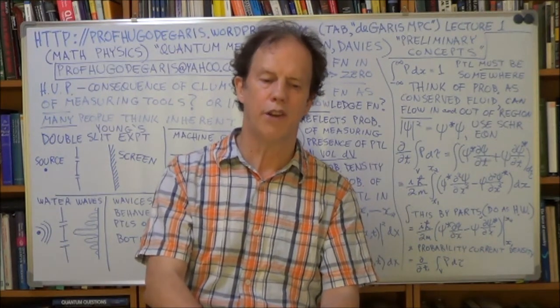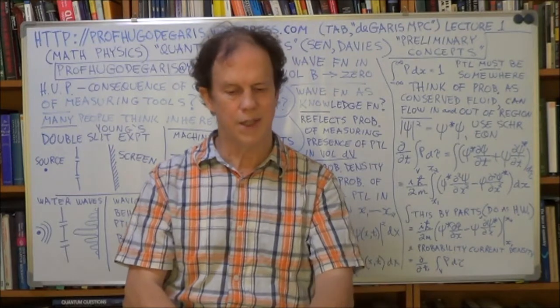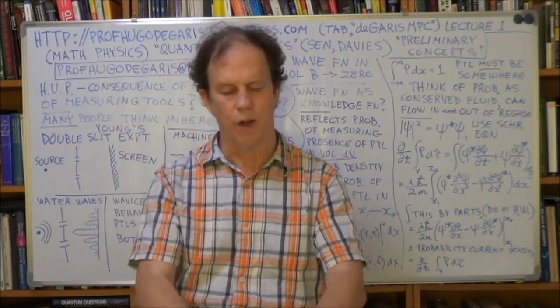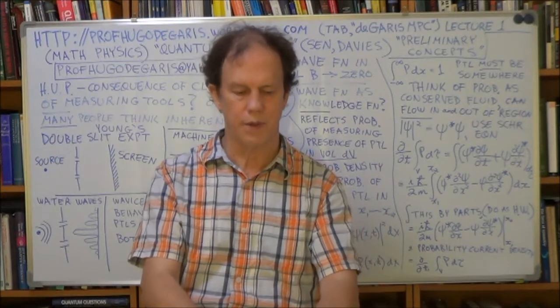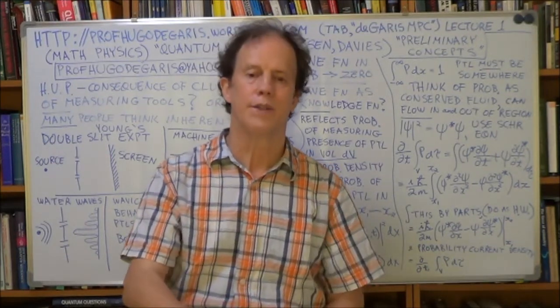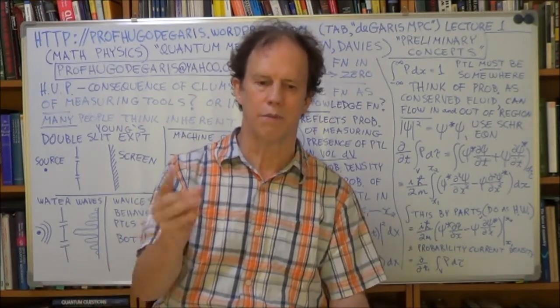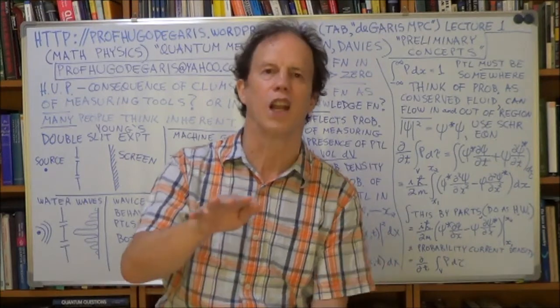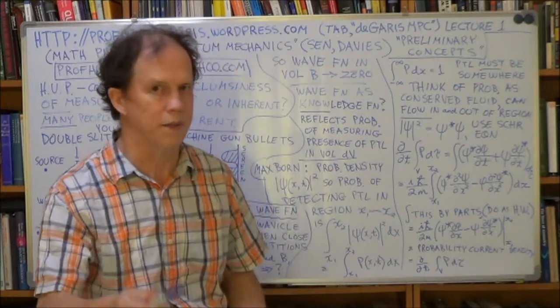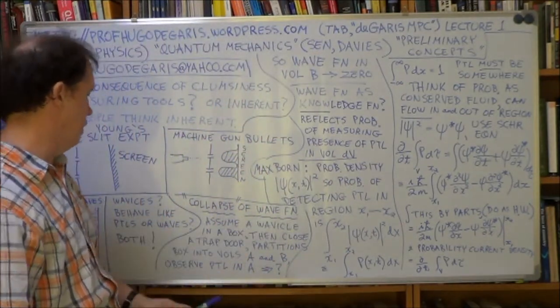And then you do a measurement, and you detect the particle, the electron, whatever, that was in volume A. So what happens to the wave function that's in volume B? Well, you now know it must be zero, because you detected the electron, and there's only one of them in this box, and it was in part A. So therefore it cannot be in B, so the wave function that's in B, after the measurement, goes to zero. It's collapsed. It's gone from something to nothing. That's what's meant by this term, the collapse of the wave function.